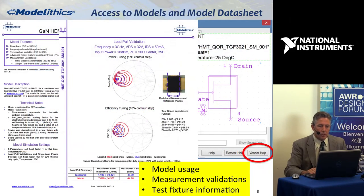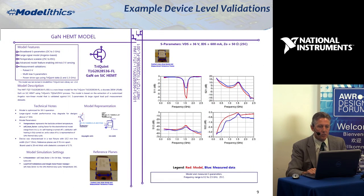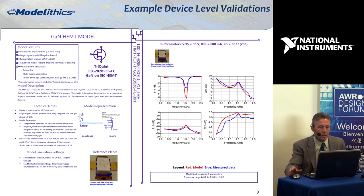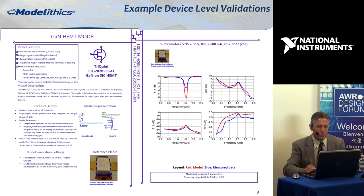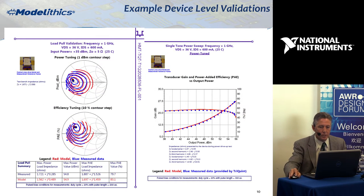The model data sheets — I've already talked about this — give you the type of information available when you pull up the model. If it's a package device, you'll get a different picture. This is a device-level validation for a large device — a 280-watt device. You can see the reference planes here and what the model symbol looks like. This shows a device-level load-pull validation and power drive-up, with output power reaching saturation at 56 dBm.